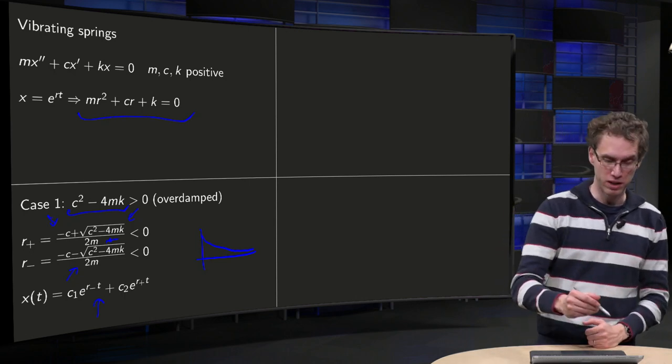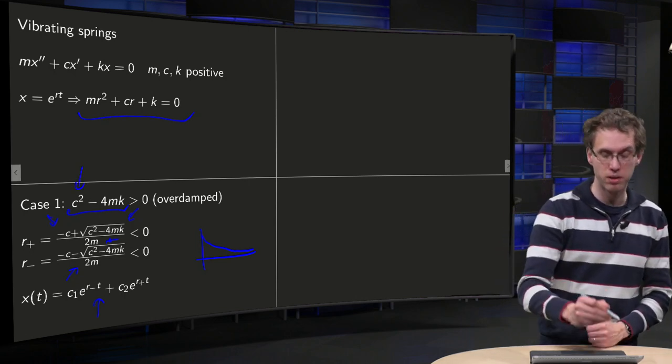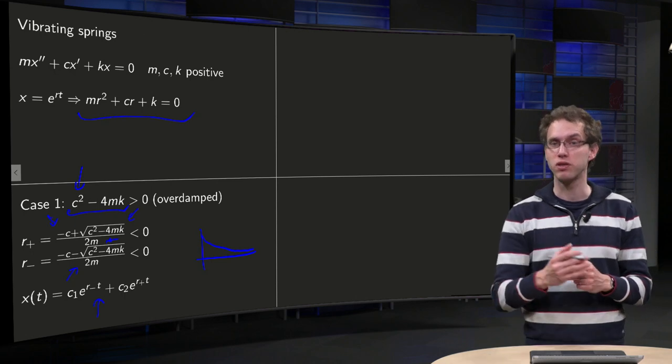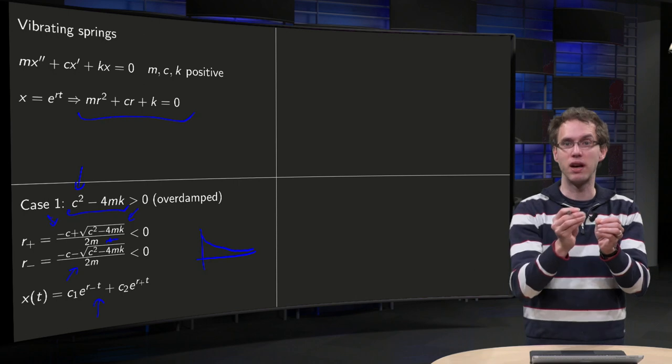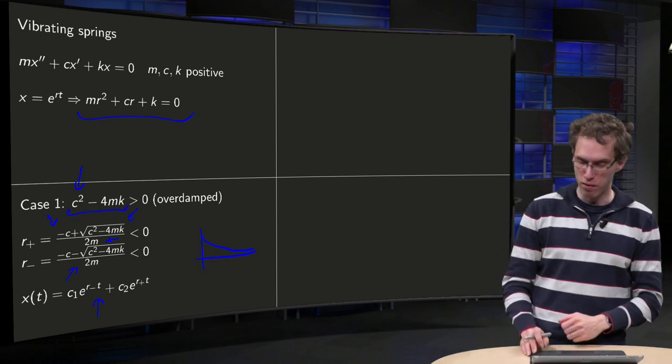That's because the friction is so large. Your c squared minus 4mk is big, so that means basically c squared is big with respect to m and k. So you have a lot of friction, so your motion damps out immediately, overdamped.